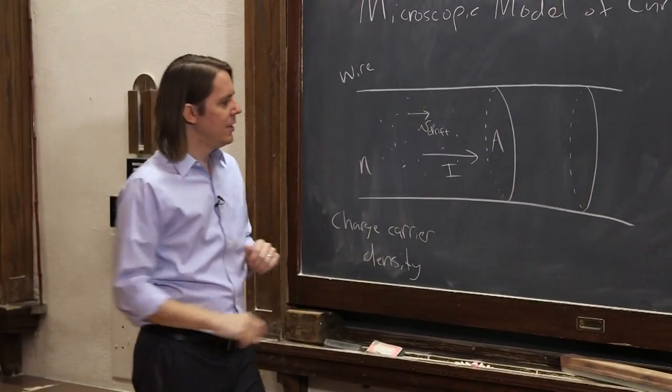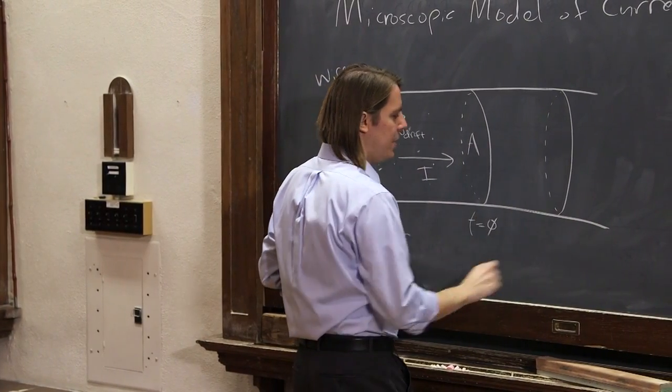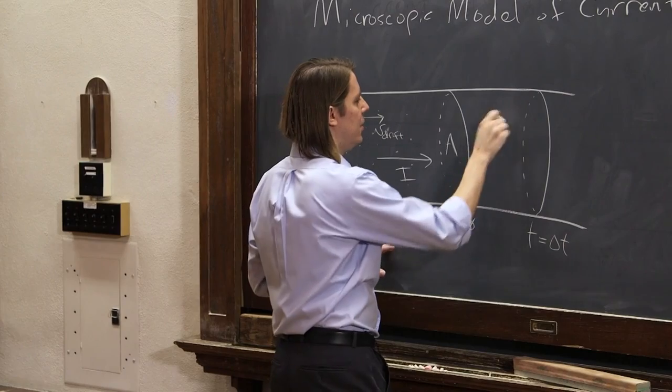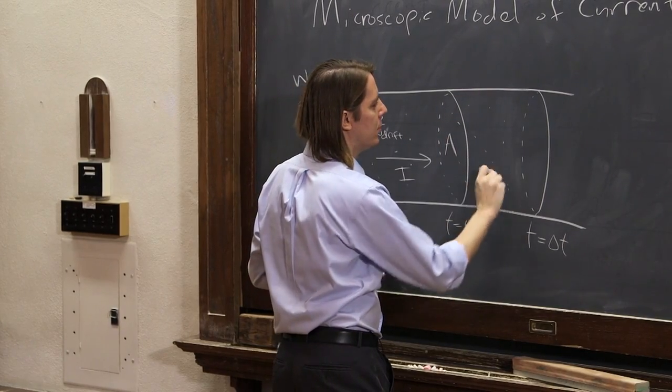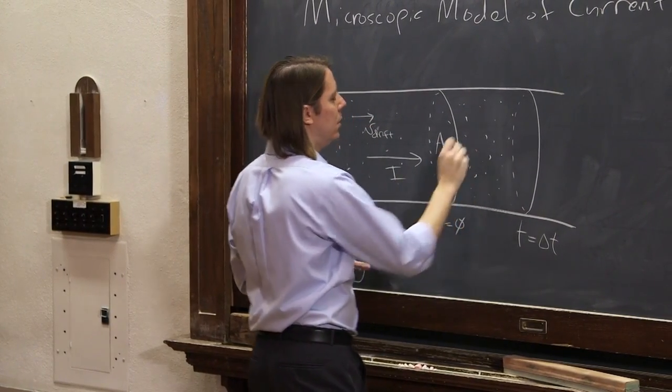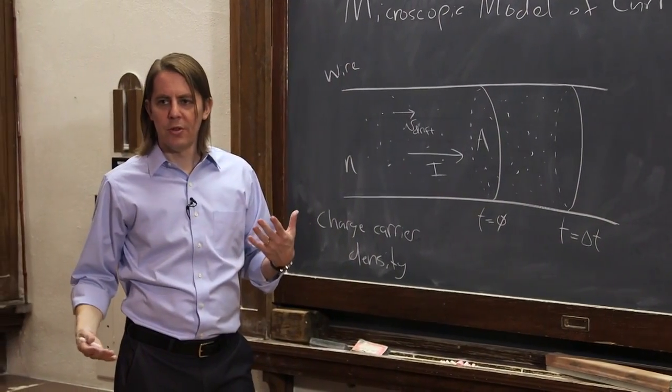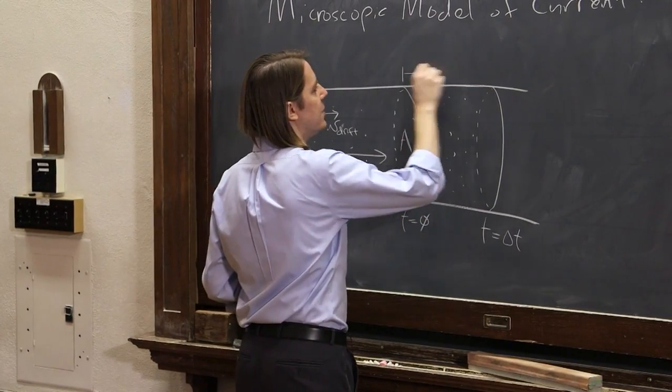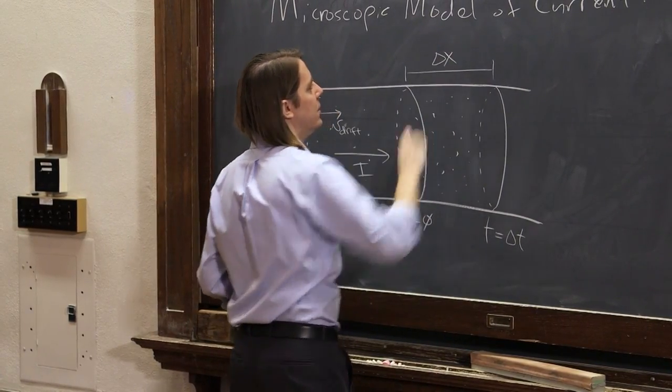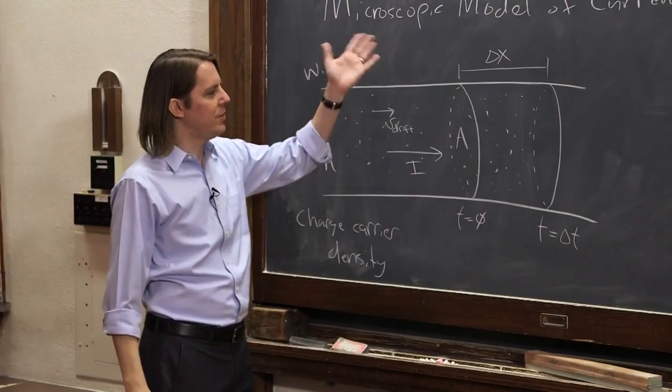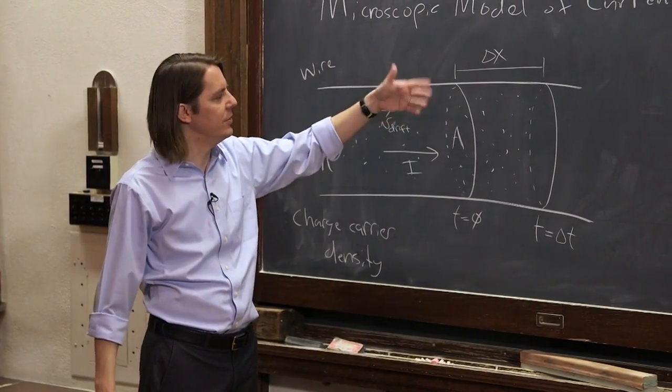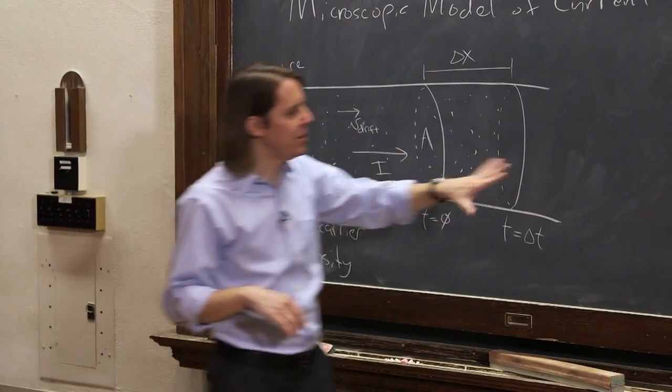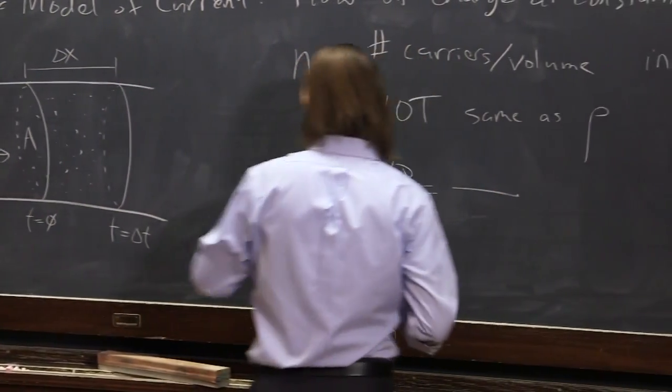So this is at t equals zero, and this is at t equals delta t, is how far these charge carriers are going. Well, if we know their velocity, then we also know how far they're going to go. They're going to go a distance delta x. And since we know their velocity, we could get the relationship is v equals delta x over delta t. So now we're equipped to plug in for delta q and delta t.